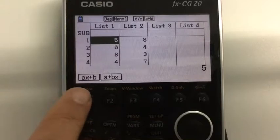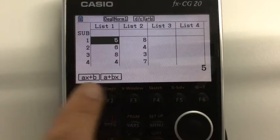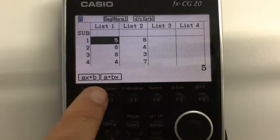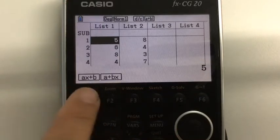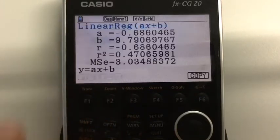Now we're given two modes here. This is for the equation of the straight line, and it just depends which one you want. So do you want Y equals AX plus B, or Y equals A plus BX? It doesn't really matter which one of these you press. I'm going to press the first one.